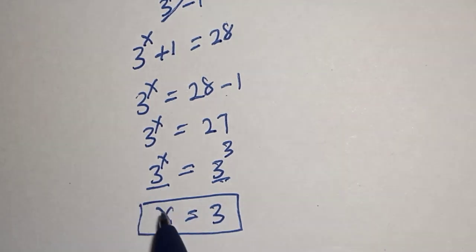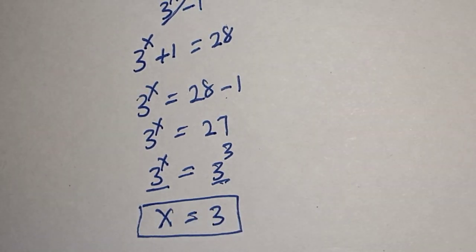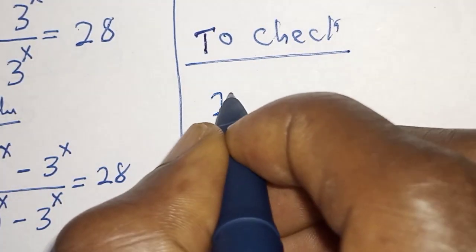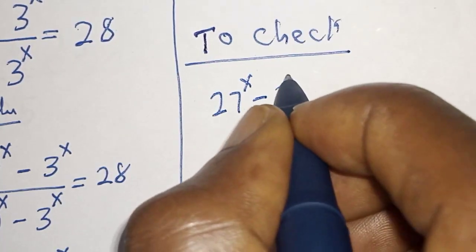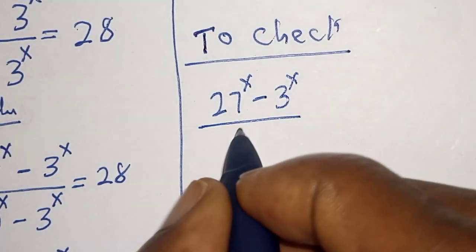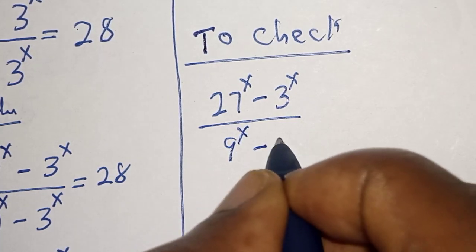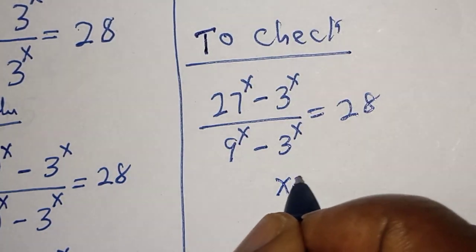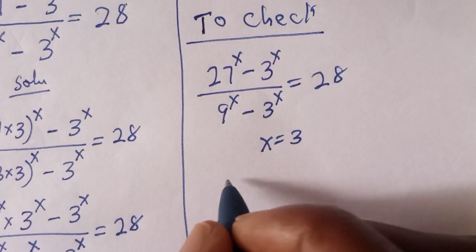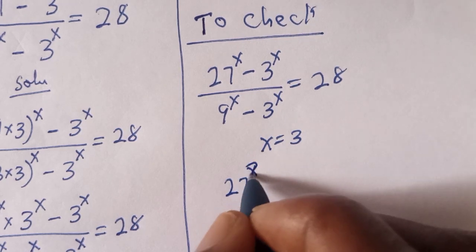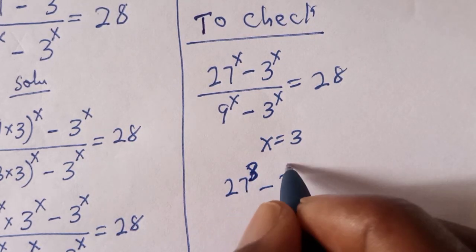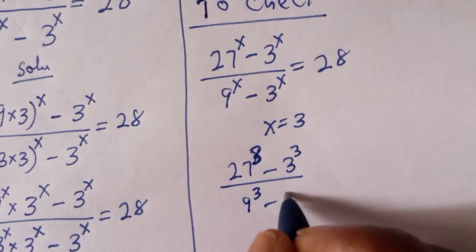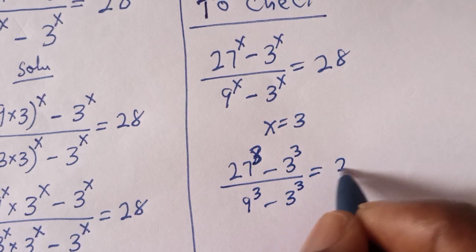So let's check to confirm if our answer is right or wrong. To check, we substitute into the given equation: 27 to the power of s minus 3 to the power of s, divided by 9 to the power of s minus 3 to the power of s, is equal to 28. Then we have 27 raised to power 3 minus 3 raised to power 3, divided by 9 raised to power 3 minus 3 raised to power 3, must be equal to 28.